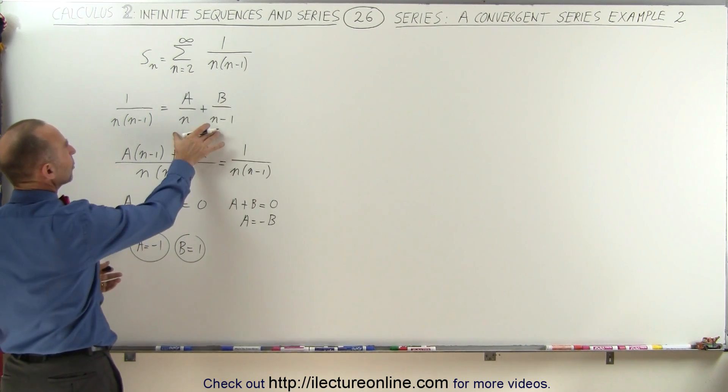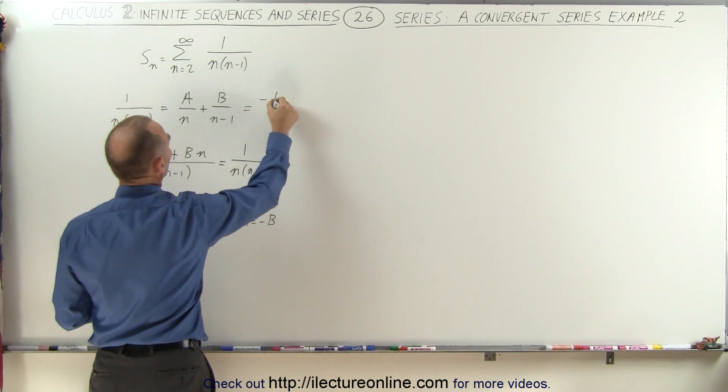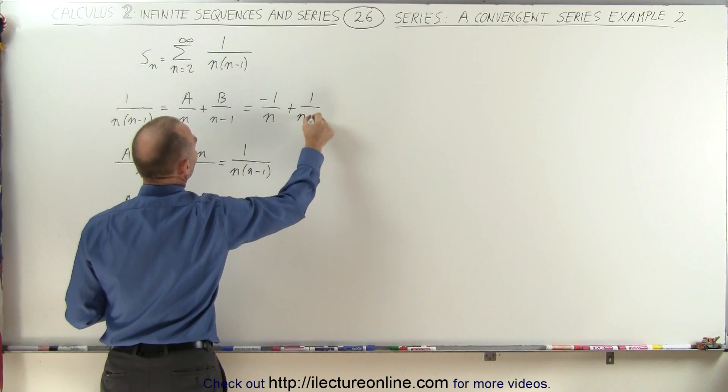In other words, I can rewrite this function as a, which is negative 1 over n, plus b, which is 1 over n minus 1.